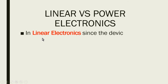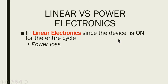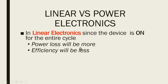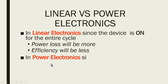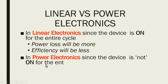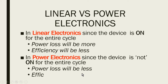In linear electronics, since the device is on for the entire cycle, power loss will be more and efficiency will be less. In power electronics, since the device is not on for the entire cycle, power loss will be less and efficiency will be more.